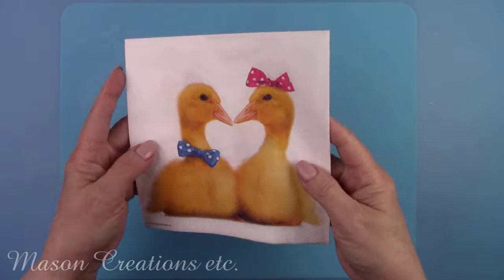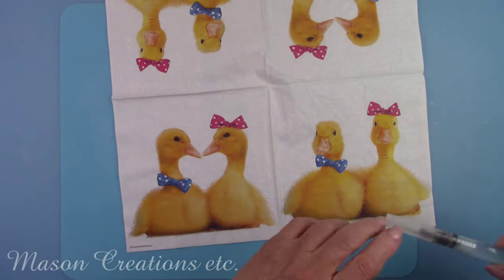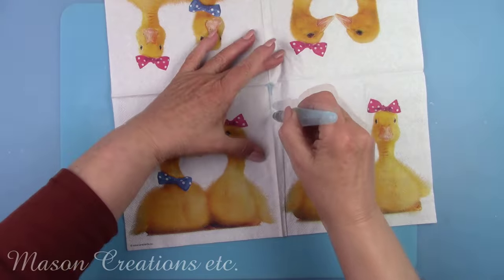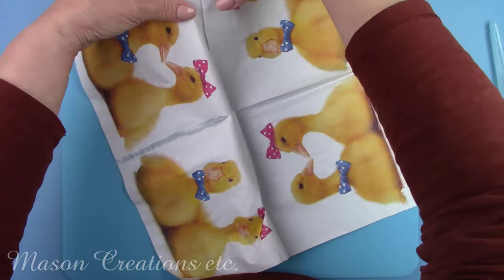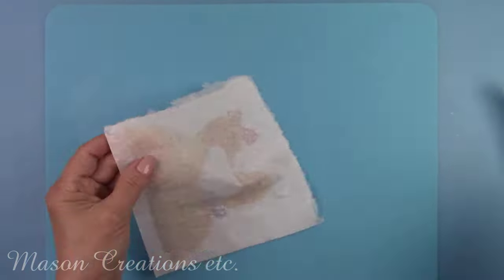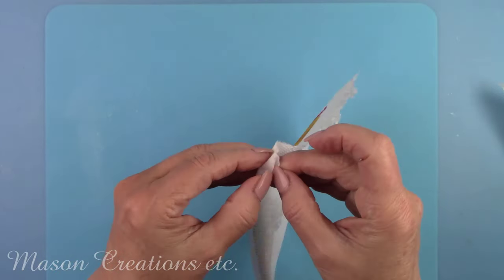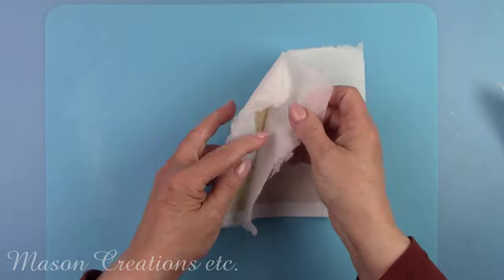Look at this cute napkin. I just love these little ducks. I'm separating one of the squares from the napkin and then I'll separate the layers. It's a three-ply napkin and I'm only going to be using the top layer with the print on it. So I need to remove the other two layers.